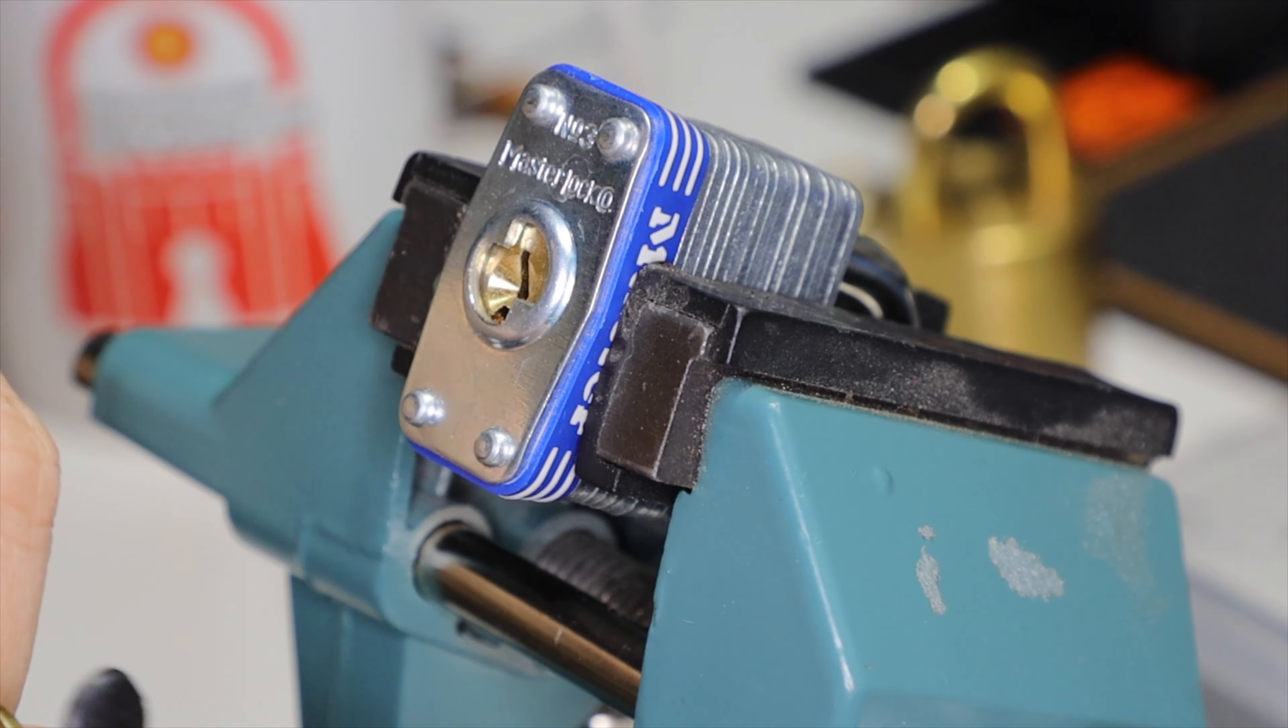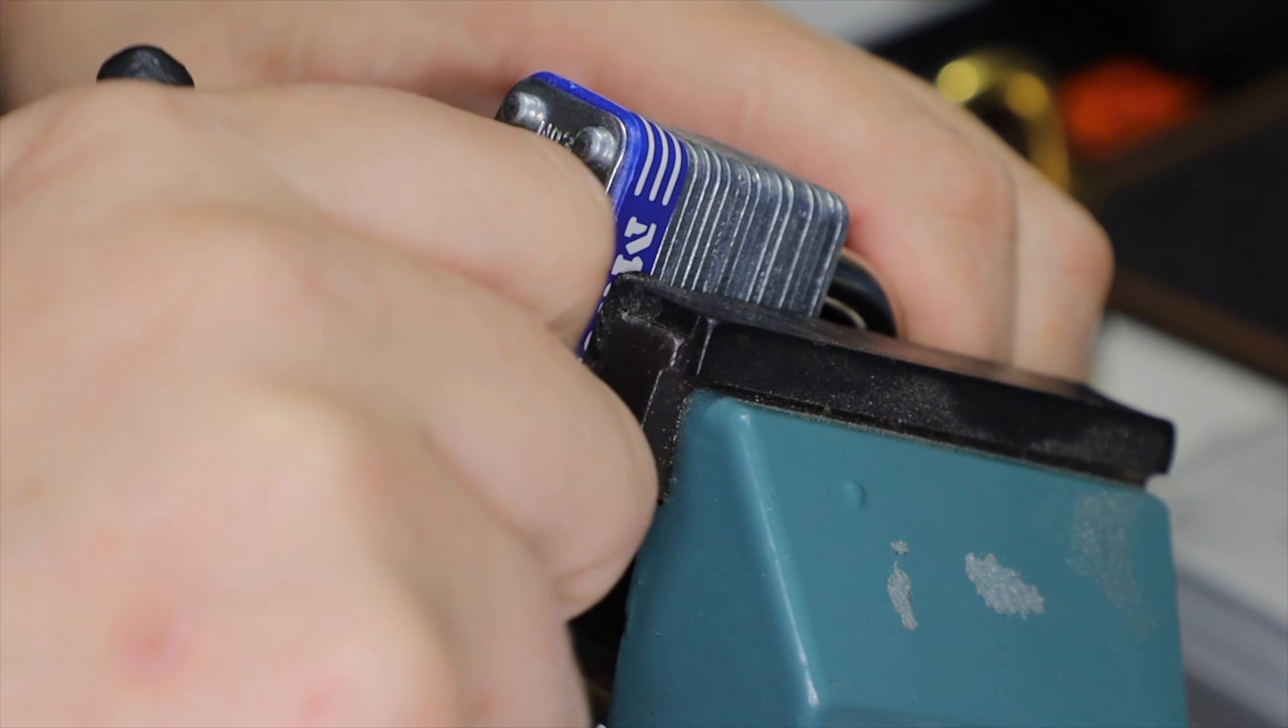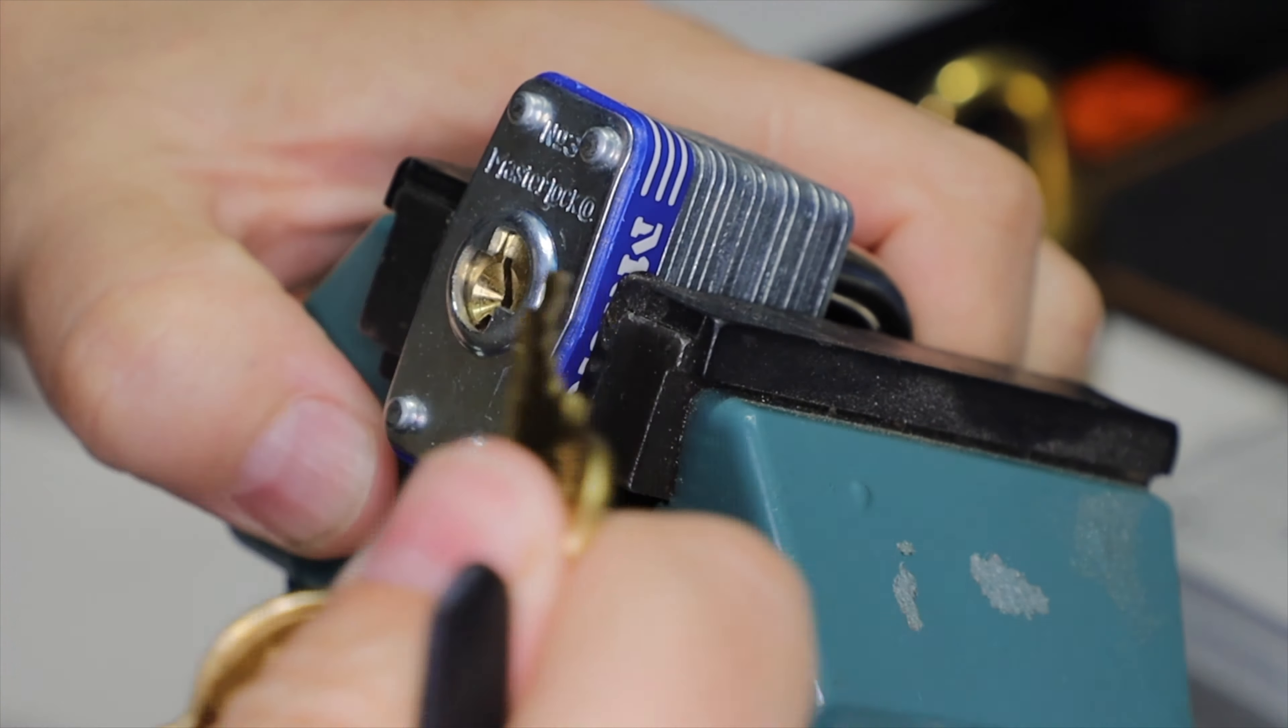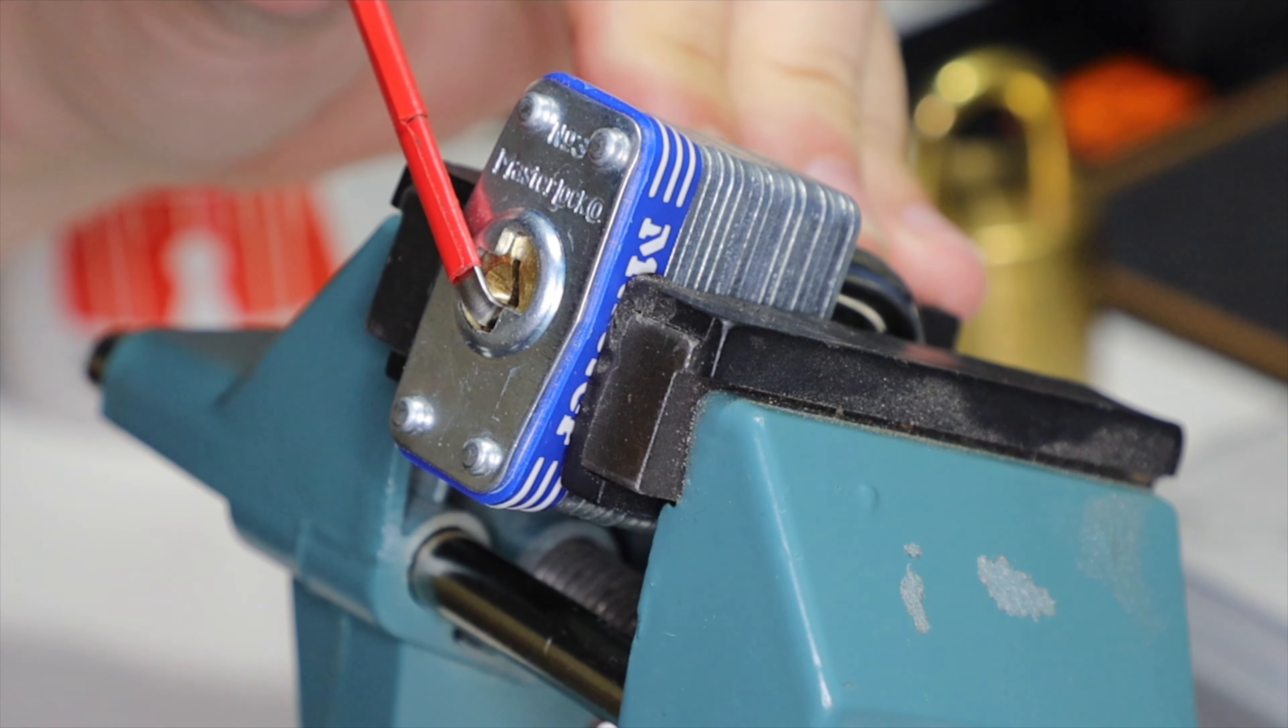Did I show the key? No, I did not. So here's the key. For each try I have to use the key to make sure it's all reset. Time starts when the pick enters the keyway and it stops when the shackle pops, or if the shackle isn't visible, when the maximum rotation on the core. This applies for padlocks.